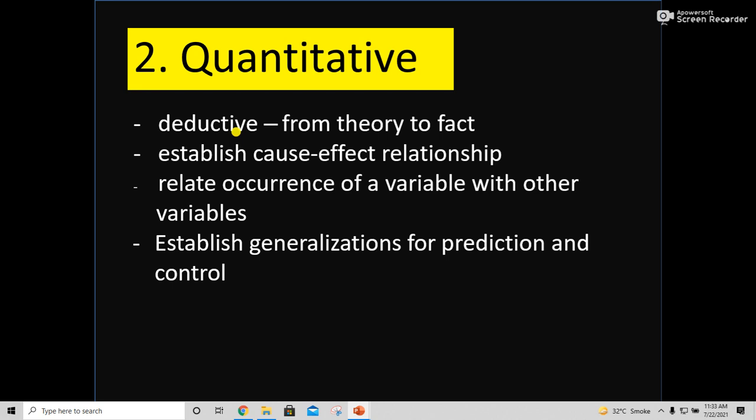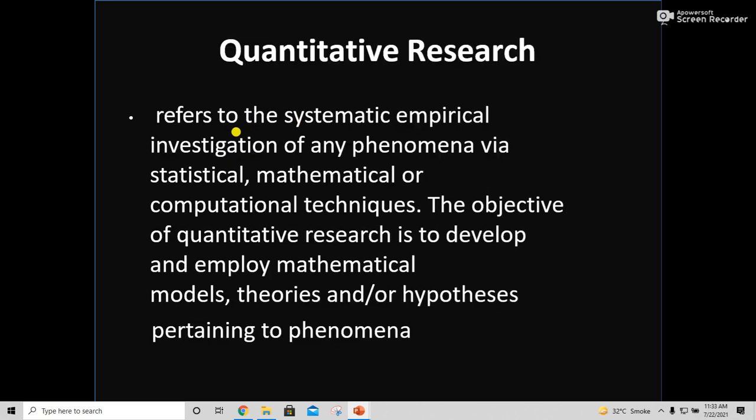In quantitative research, it is deductive from theory to fact, establishing cause and effect relationships. In quantitative research, we should establish a relationship and study the cause and the effect. We relate the occurrences of variables with other variables and establish generation, prediction, and control. Quantitative research refers to the systematic empirical investigation of any phenomena via statistical, mathematical, or computational techniques.